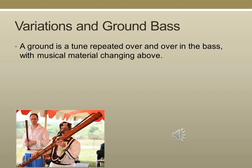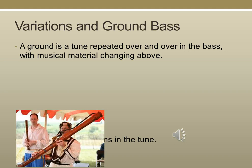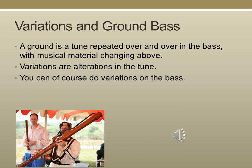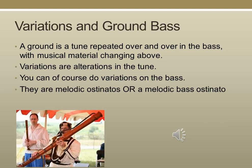A ground is a tune repeated over and over in the bass line with the musical material changing above — in other words, it's an ostinato. As you can hear in the example, it has lots of changing parts above a repeated bass. Variations are alterations in the tune, and you can do variations on the bass as well. There are melodic ostinatos or even melodic bass ostinatos.